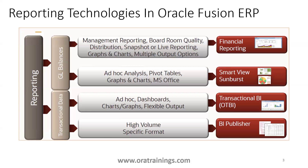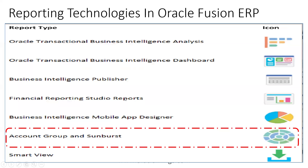The list of reporting technologies available in Oracle ERP includes around seven options: Financial Reporting, SmartView, Sunburst, OTBI, BI Publisher, and a mobile-specific report as well. The account group and Sunburst fall into a similar category.